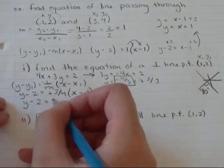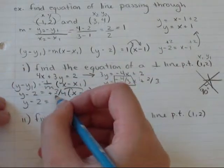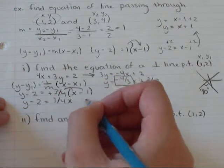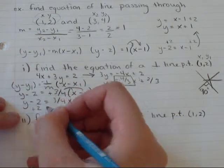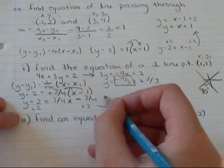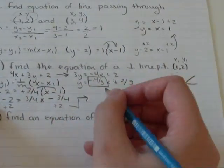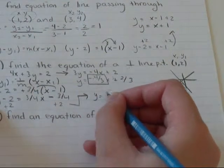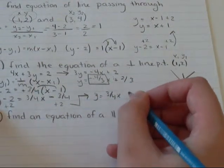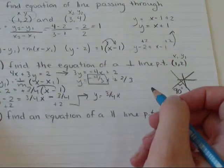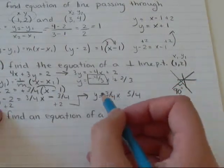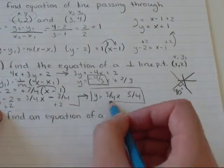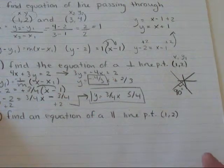y minus 2 equals, we're going to distribute the 3 quarters. 3 fourths x minus 3 over 4. Take the 2 over to this side. Plus 2. Plus 2. I'm going to move over here. y equals 3 fourths x. And negative 3 fourths plus 2 is 5 over 4. So, that's the equation in y-intercept form.